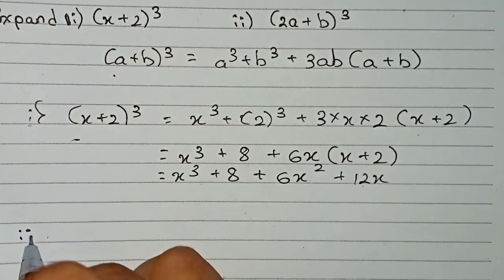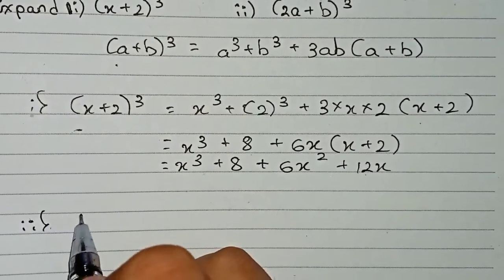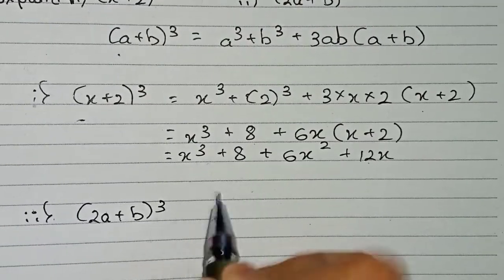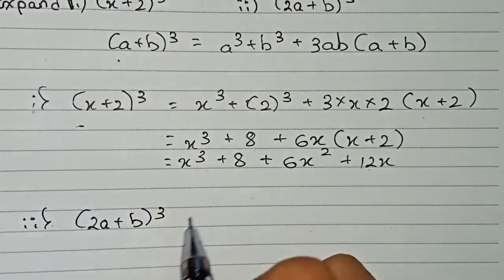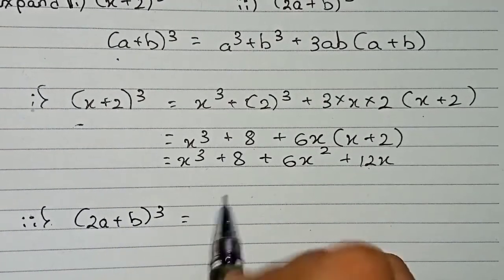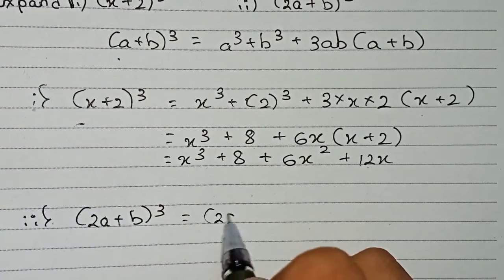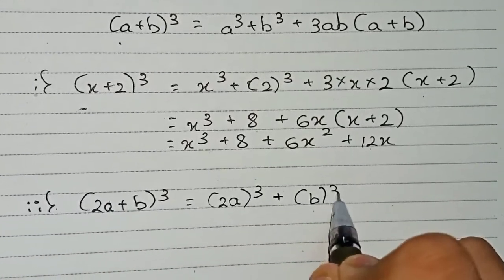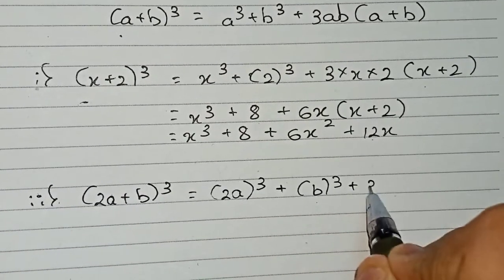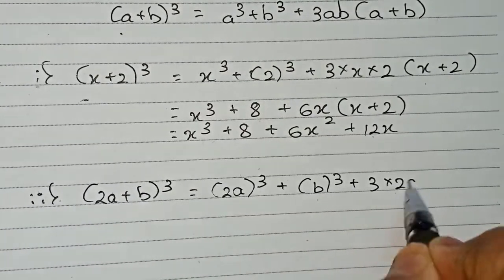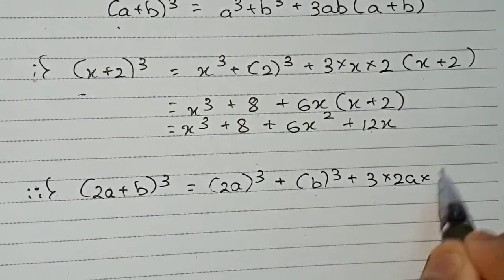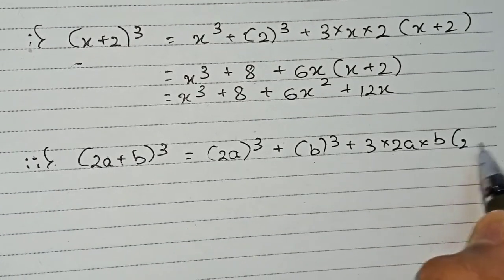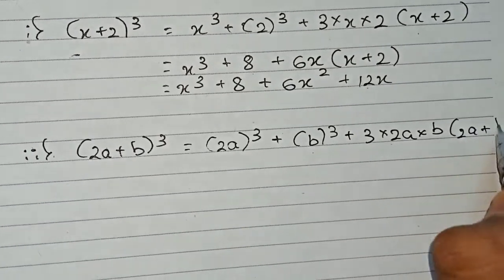Question two says 2a plus b whole cube. Using the same process: first 2a whole cube, plus b whole cube, plus 3 into 2a into b, into 2a plus b.